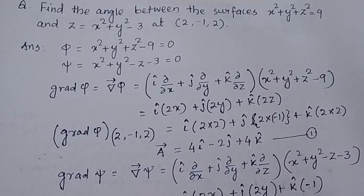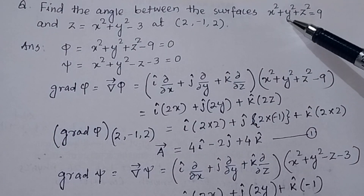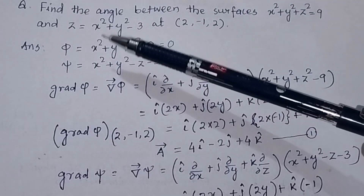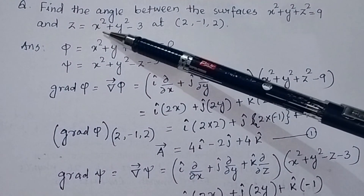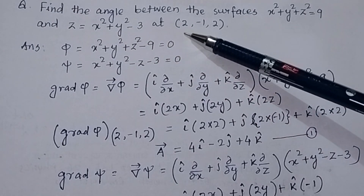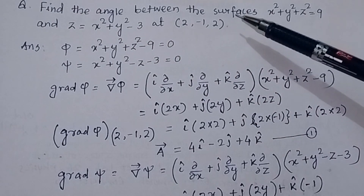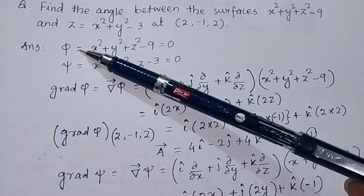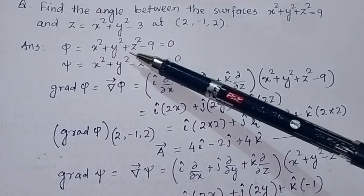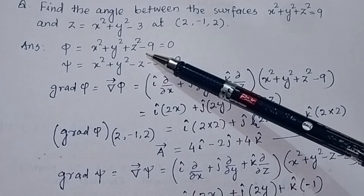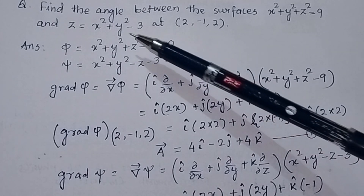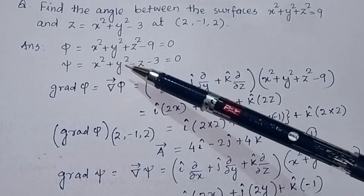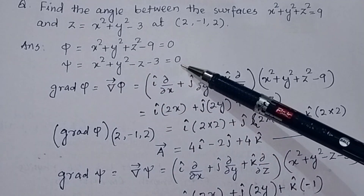Find the angle between two surfaces: x² + y² + z² = 9 and z = x² + y² − 3 at the point (2, −1, 2). We are given two surfaces: φ = x² + y² + z² − 9 = 0 and ψ = x² + y² − z − 3 = 0.